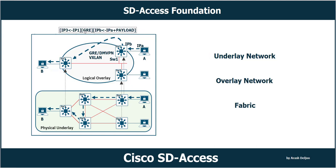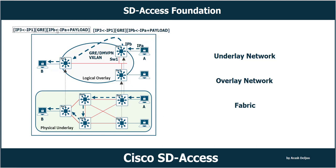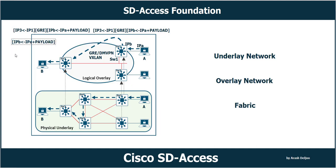Devices in the path don't see IP-B, the real traffic destination — they see only the outer IP header and forward the traffic to switch three. Only switch one and switch three know about the real source IP and original destination IP. When switch one encapsulates traffic and switch three receives it, switch three de-encapsulates the traffic — strips the GRE header and the outer IP header — and sends the original traffic to computer B. This is tunneling, or overlay forwarding.